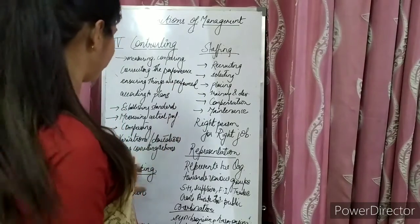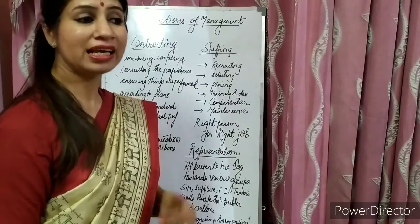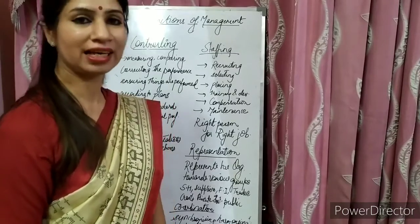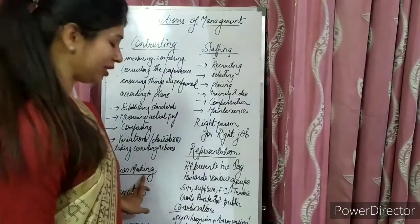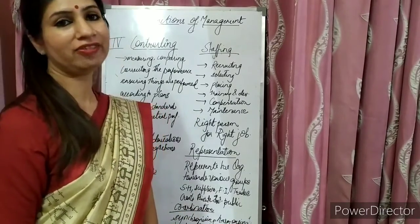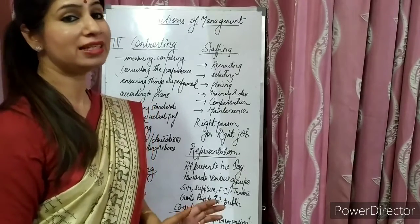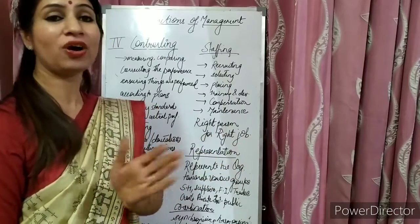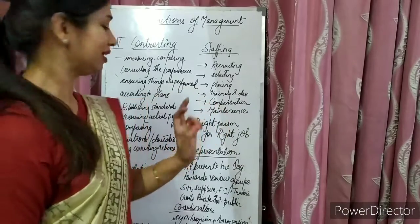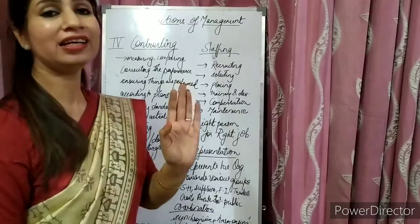Next we come to other functions, and the first is decision making. A manager has to take decisions at each and every step while managing. Without taking decisions, he cannot perform his task. Decision making is the process of selecting the best alternative among various alternatives available — when managers have many options, they pick the best one.